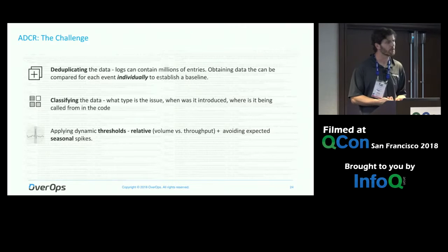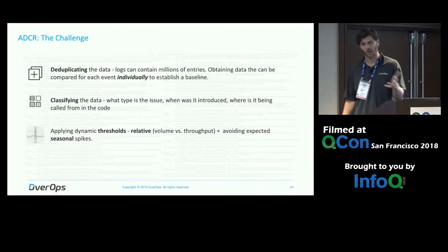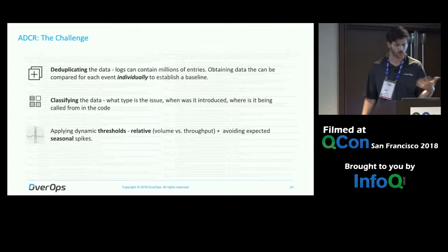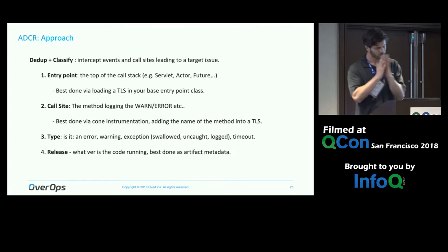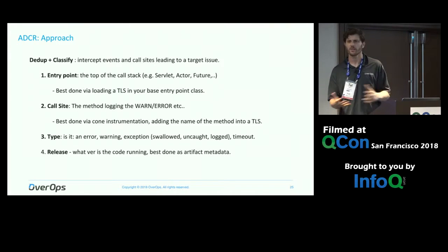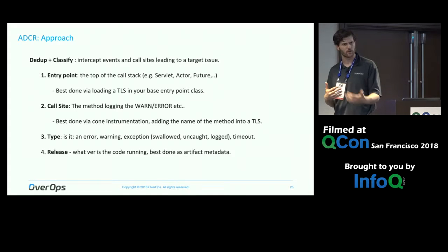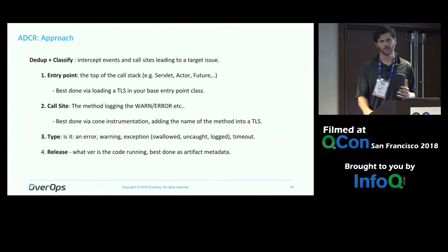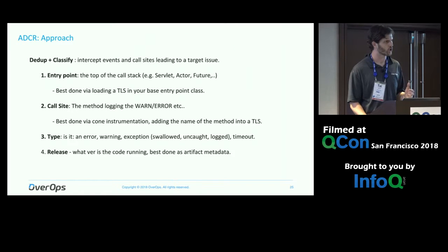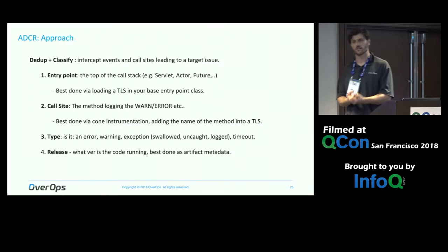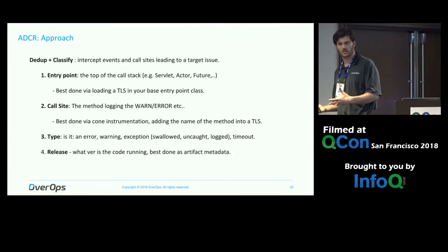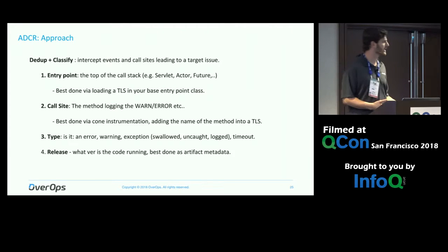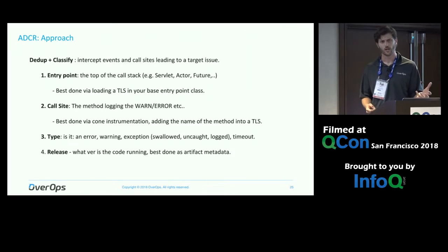Let's talk about some strategies we can put in place — a combination of a previous talk I gave and some new things we just released from our research side that are open source. What do we need to do? The main challenge is that by the time data hits our log files, it's almost too late. It's very hard to go from text back into data that you can operate on and apply machine learning and anomaly detection, because you're dealing with unstructured text.